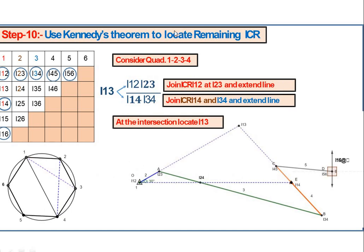To locate I13, join points 1 and 3. The two triangles formed are: I12–I23 on one side and I14–I34 on the other. Extend the line from I12 to I23 (through O and A), and extend the line from I14 to I34 (through E and B). Their intersection gives ICR I13.